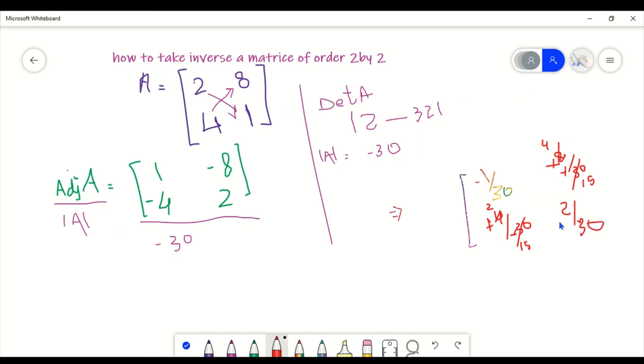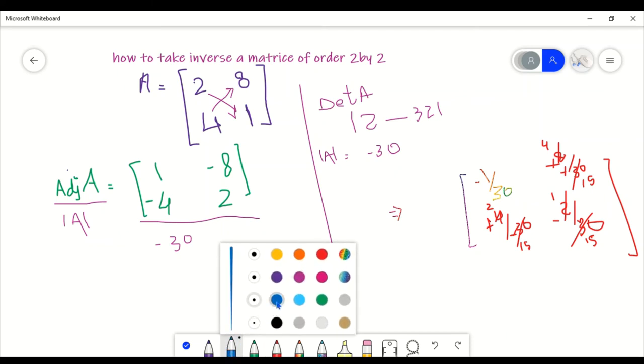If we take out this factor, we have 4 over 15. So what's our final answer? Our final answer is... let me write it. Our final answer is minus 1 over 30.